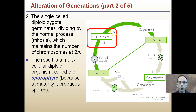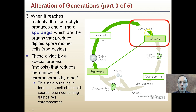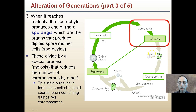Working clockwise, we reach the sporangium. When it reaches maturity, the sporophyte produces one or more sporangia — the organs that produce the diploid spore mother cells, or sporocytes. These divide by meiosis, which reduces the chromosome number by half, crossing the line from diploid to haploid. The initial result is four single-celled haploid spores, each containing n chromosomes. So we started with 2n and now have four haploid n spores.